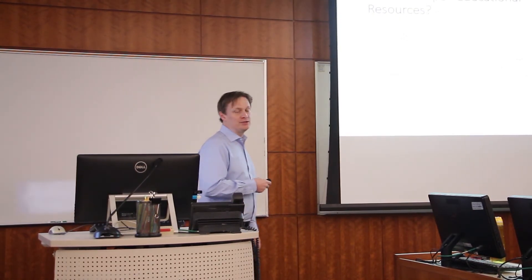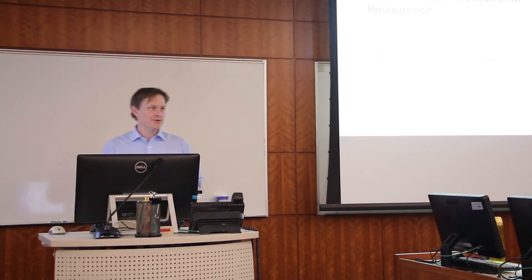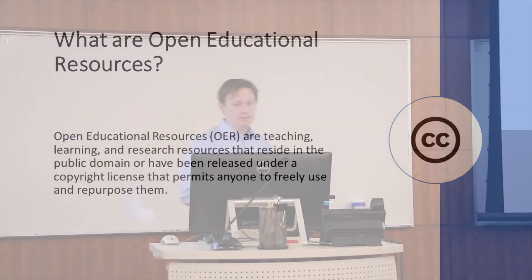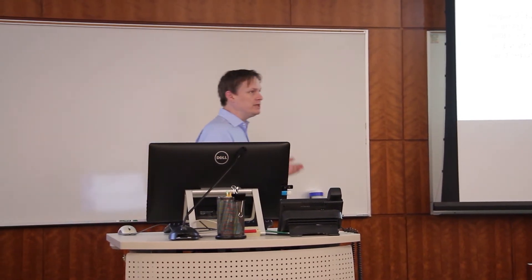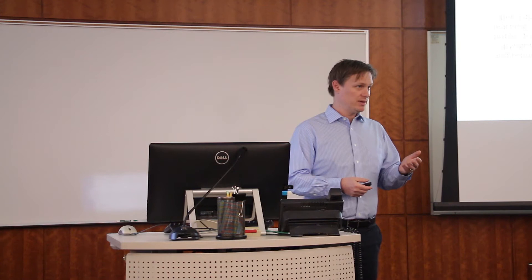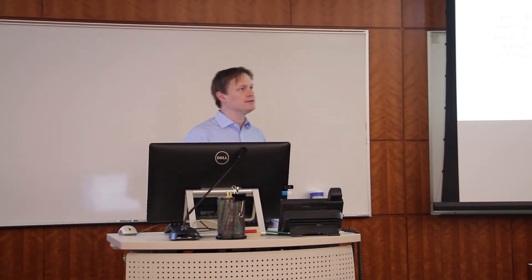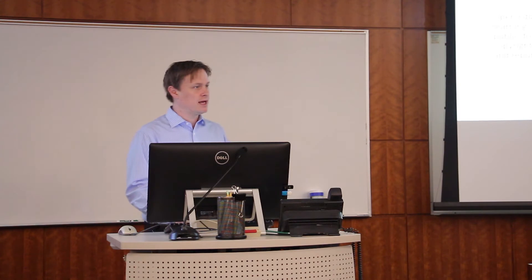Open educational resources — also known as OER — are commonly defined as teaching, learning, and research resources that reside in the public domain, where there's no copyright. Things like Project Gutenberg online have books in the public domain. But OER also includes resources released under a copyright license that permits anyone to freely use and repurpose them. The most common form is the Creative Commons license, and there are lots of variations of CC licenses.